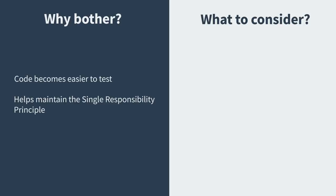Using DI will also help us stick to the single responsibility principle because it will keep classes doing only their job and not worrying about the instantiation logic of their dependencies. Our codebase also becomes less rigid — if we want to switch out the mailer module with a completely different method of message delivery, that will not be an issue as long as they both implement the same interface.